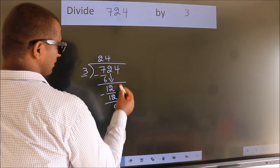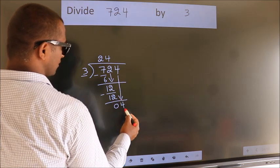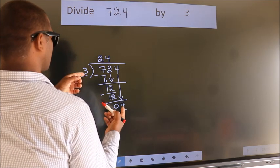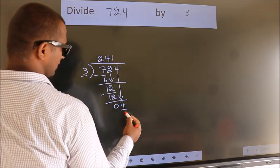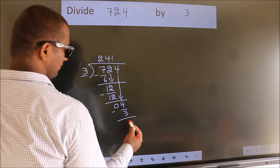After this, bring down the beside number. So 4 down, so 4. A number close to 4 in 3 table is 3 times 1, 3. Now we subtract. We get 1.